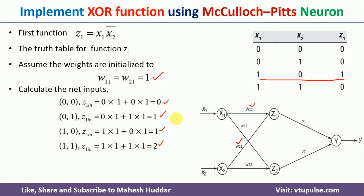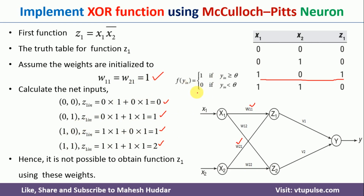Looking at these net inputs and the activation function — which fires when net input is greater than or equal to theta — if theta equals 1, the neuron fires in three cases, but we only expect it to fire when X1=1 and X2=0. If theta equals 2, it fires only for the (1,1) case. So these weights W11=W21=1 will not work and we need to find new weights.